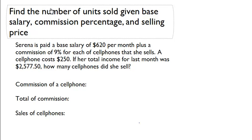Find the number of units sold, given base salary, commission percentage, and selling price. Serena is paid a base salary of $620 per month plus a commission of 9% for each of the cell phones that she sells. A cell phone costs $250. If her total income for last month was $2,577.50, how many cell phones did she sell?